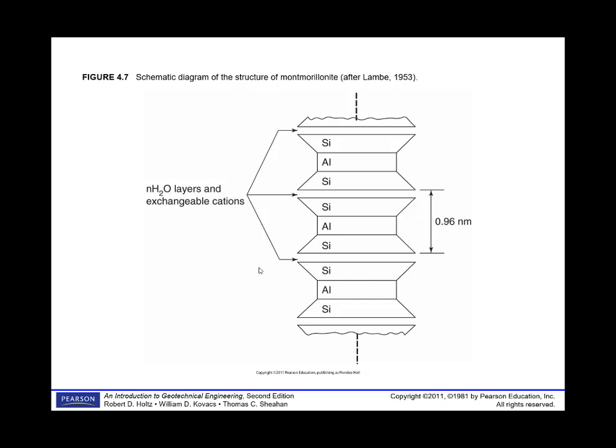Montmorillonite has two silicon tetrahedral sheets with an octahedral sheet in the middle, and the distance between them is 0.96 nanometers. Unlike kaolinite sheets, which bond together fairly strongly, montmorillonite sheets can move quite far apart if water gets in, giving montmorillonite a really high swell potential. If cations get in there, they can form strong bonds that affect the shrink-swell potential. Surface interactions are very important for montmorillonite clays. These also form much thinner and longer sheets, so the aspect ratio — width or length to thickness — is much larger than for kaolinite.